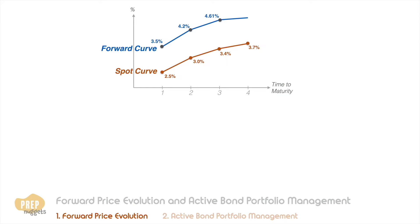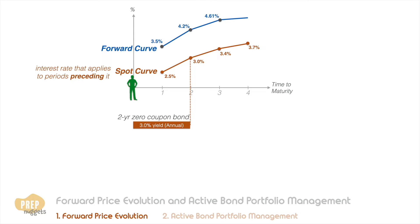When comparing the spot curve against the forward curve, it's very important that you understand what each point on the curves means. On the spot curve, it refers to the interest rate that applies for the periods preceding it. For example, this point on the spot curve means that a two-year zero coupon bond should have an annualized yield of three percent. This is the one-year forward curve, and these are the one-year forward rates plotted on the graph. For instance, this point means that the borrower who takes a one-year loan two years from now will have to pay 4.2 percent interest for that year.